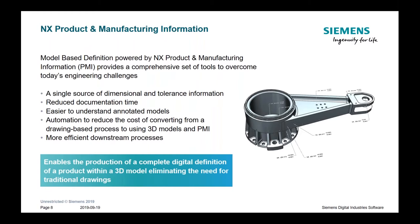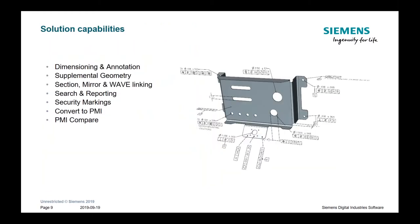These models are also easier to view on electronic devices such as ruggedized tablets. Companies that rely on 3D annotation see fewer change orders and less scrap. It also supports the reduction in downstream errors and scrap by maximizing downstream reuse. There's also a solution around converting to PMI, which significantly reduces the cost of converting from a drawing-based process to using models with PMI. NX PMI is an advanced tool set for capturing and associating design and manufacturing requirements directly on the model or assembly, and this information is available for reuse in other applications.